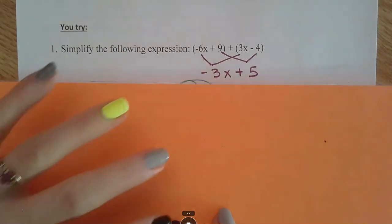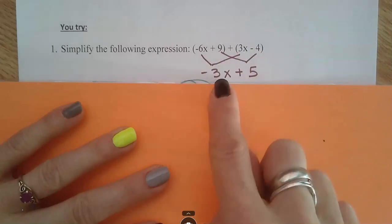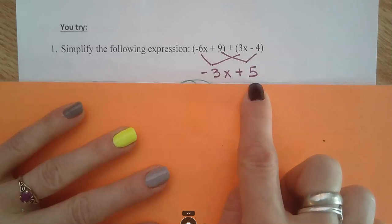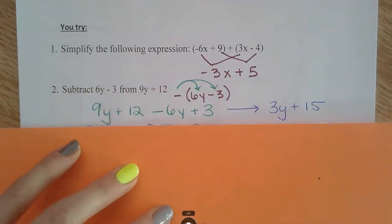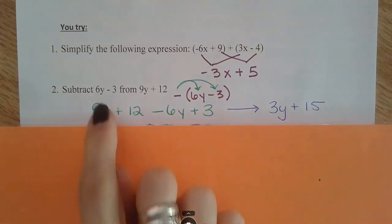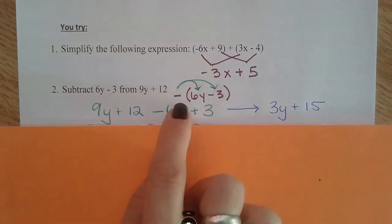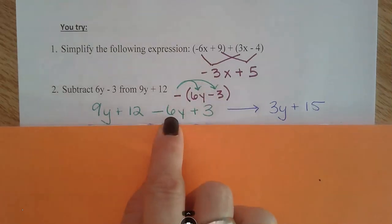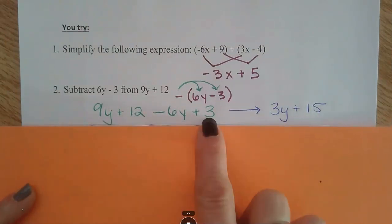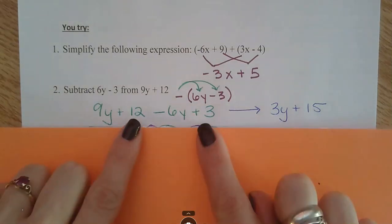If you're ready, we'll check these over. The first one had nothing to distribute, so I just found my like terms and put the x's together, and then 9 minus 4 was 5. The next one did have a negative to distribute — I'm subtracting that whole 6y minus 3, so I need to distribute that negative to everything inside the parentheses, giving me negative 6y and positive 3.